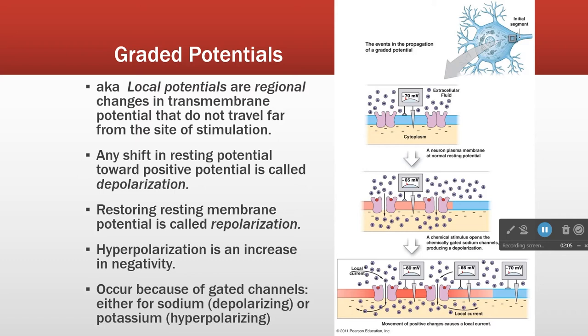A graded or local potential is a regional change in the membrane potential. A synonym for membrane potential is transmembrane potential, because when we measure electrical potential we always have one probe on the outside and one probe on the inside — the voltage difference is across the membrane.